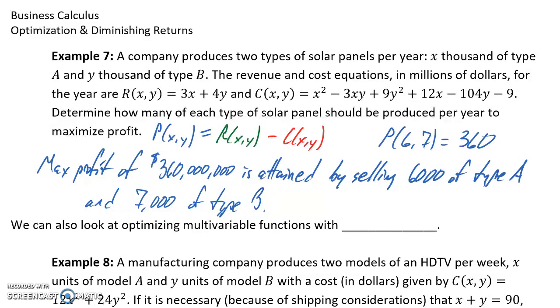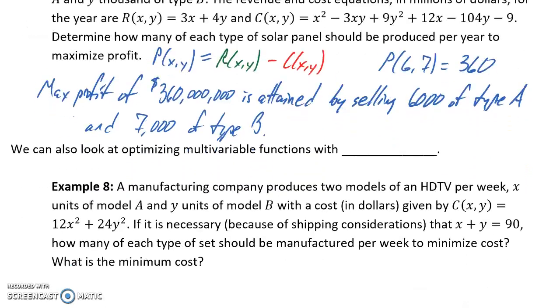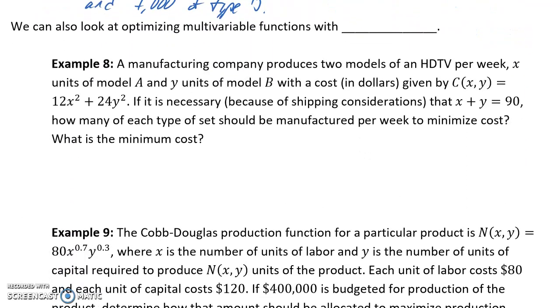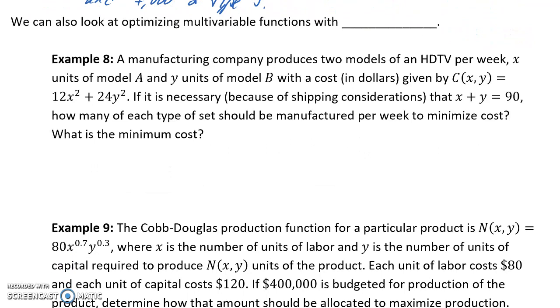So even though those are multivariable functions, they're very similar to what we did with single variable functions in terms of using Wolfram Alpha. Things will change just a little bit if we look at optimizing multivariable functions with constraints. So what that means is, in addition to simply optimizing a function, we have to look at some constraint or some additional information being applied that constrains our results.